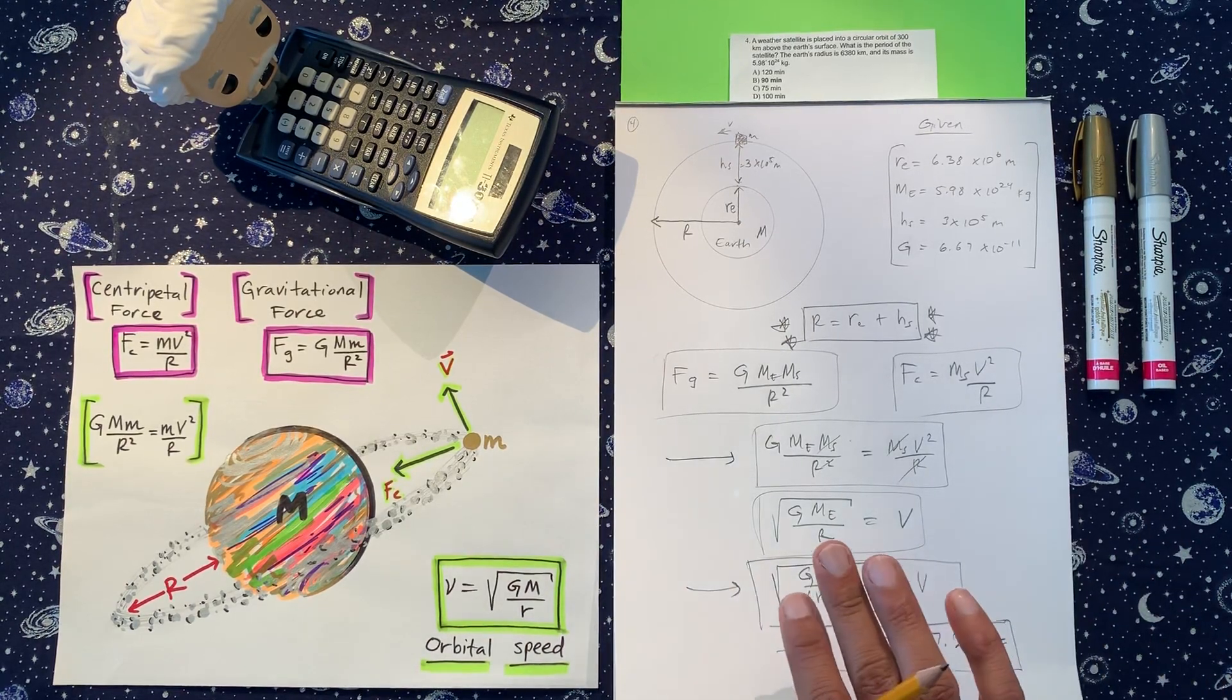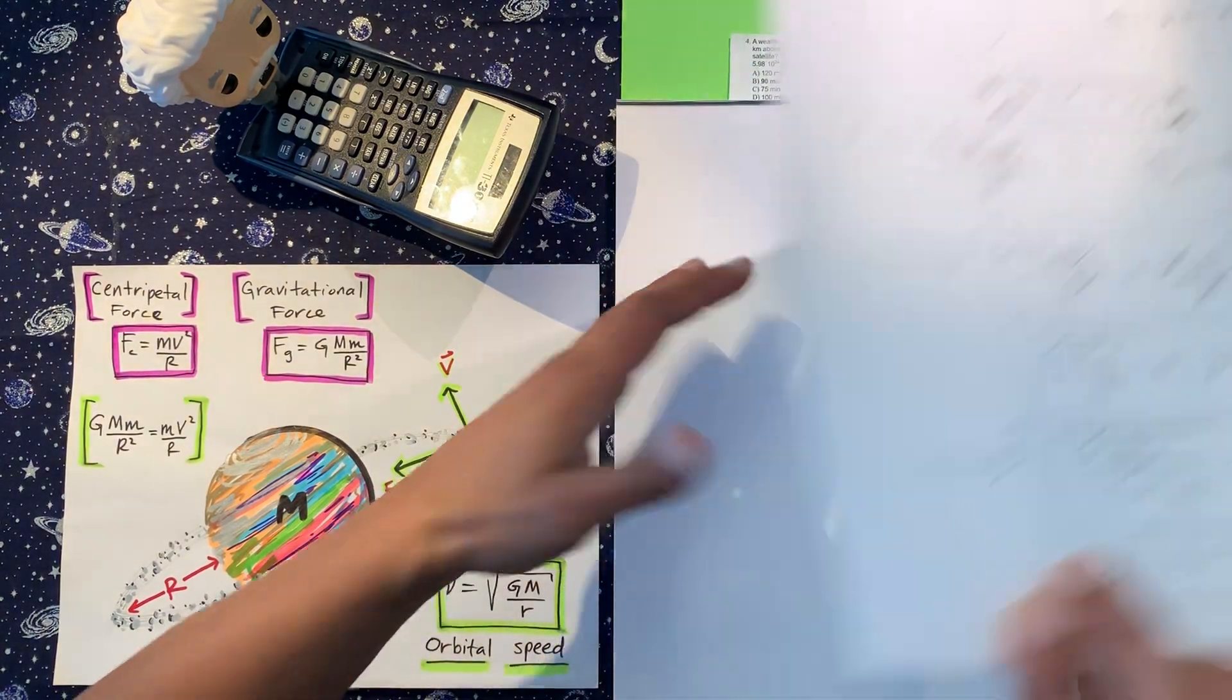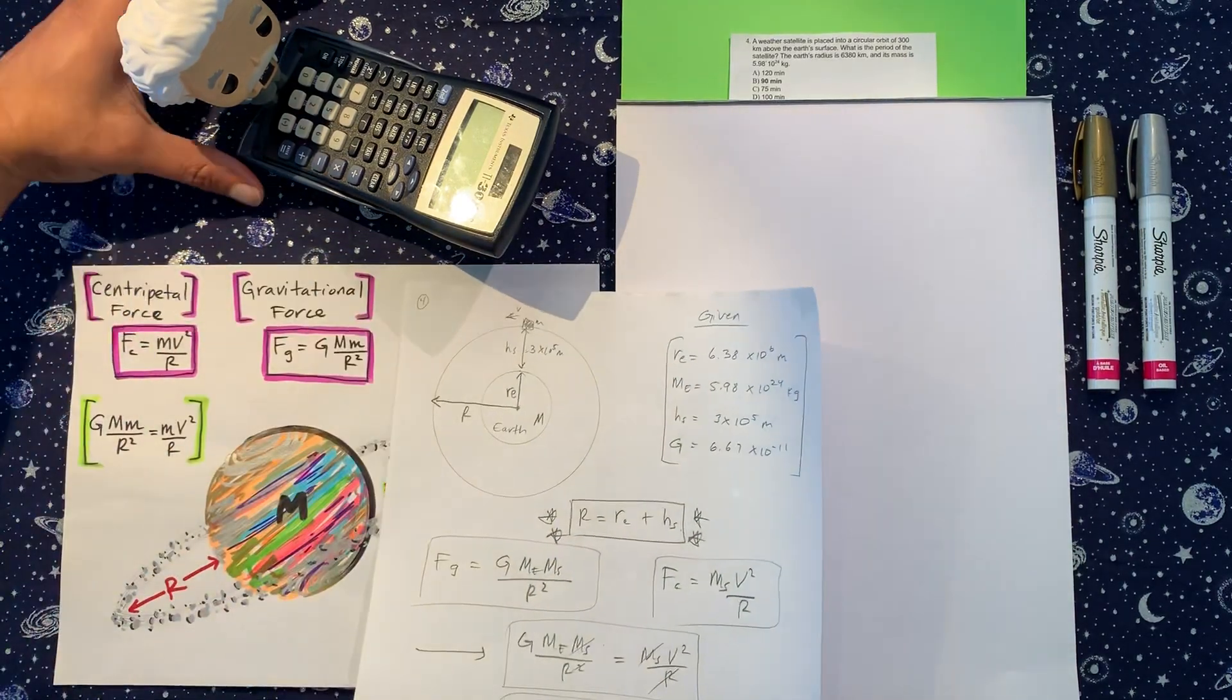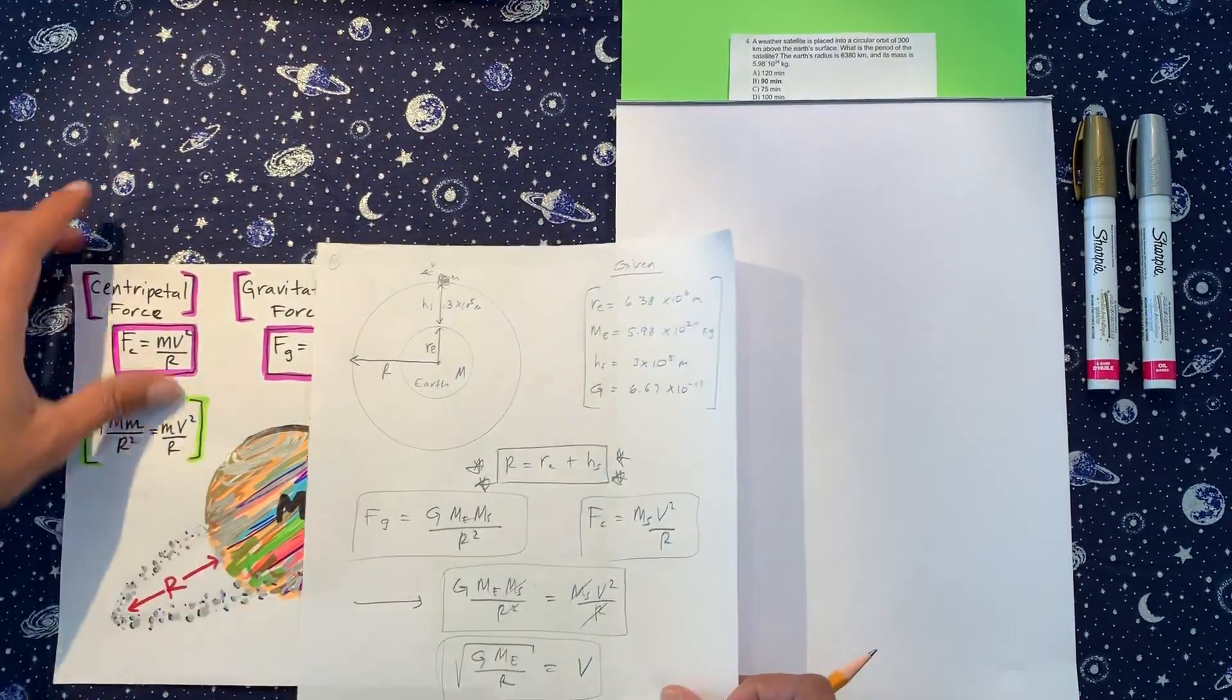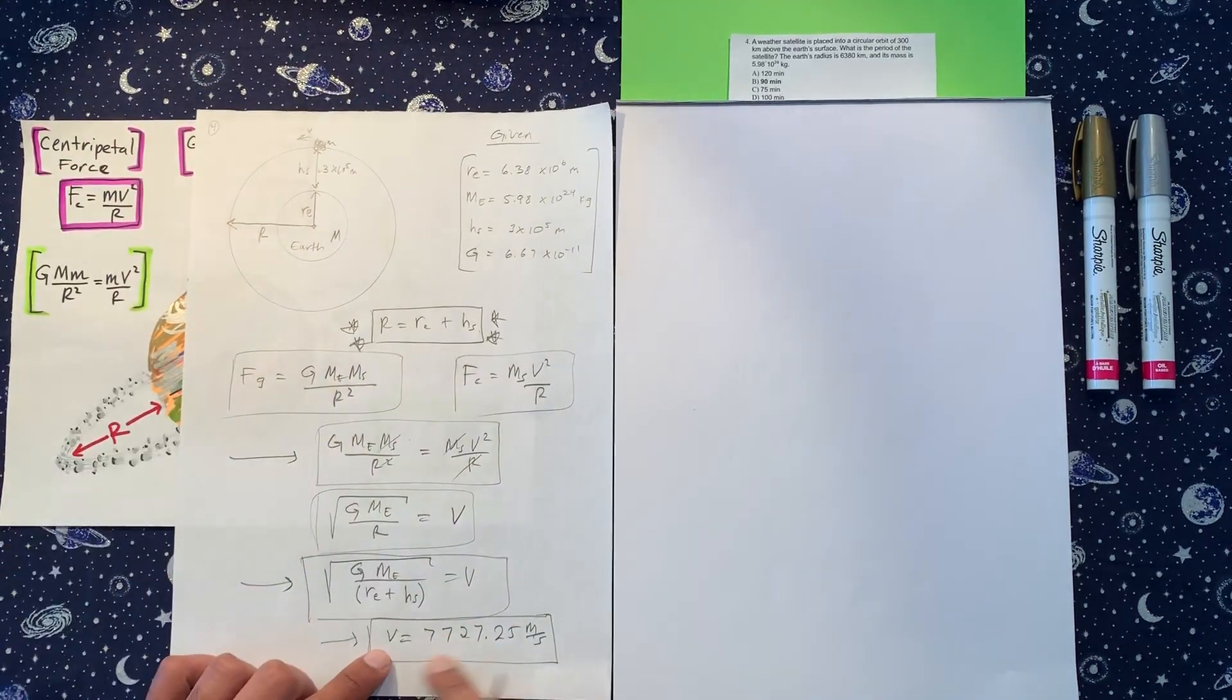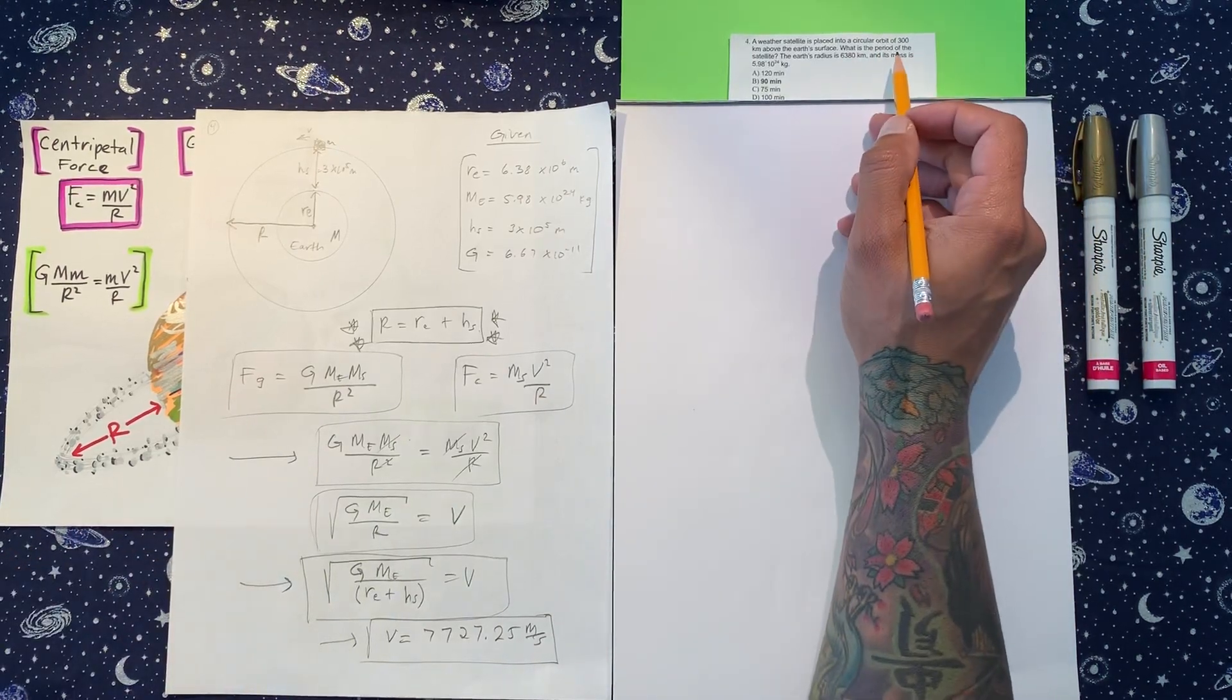All right, now let's get the period. So I'm going to put this here and cover up my drawing. And I'm sorry, we're going to have to move you. Okay. So we got this velocity. Let's make sure we can see. We got this velocity here. And now we want to try to incorporate period somewhere.